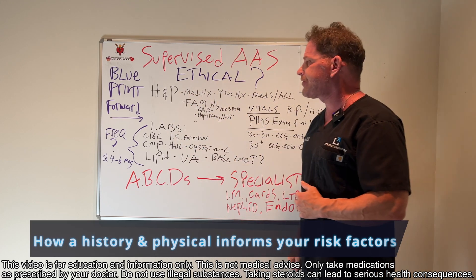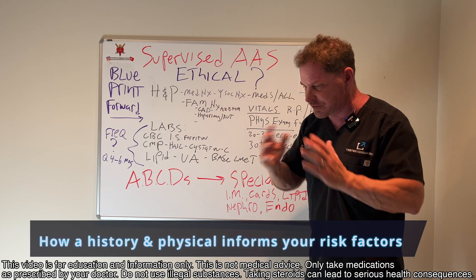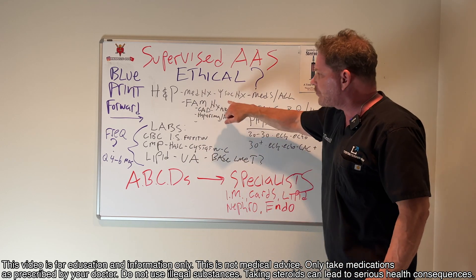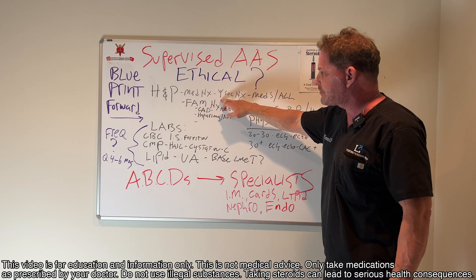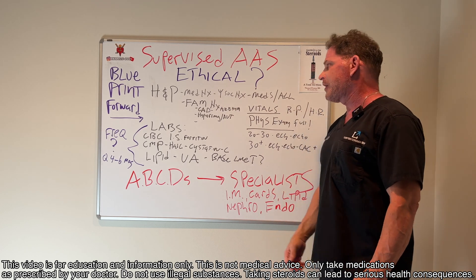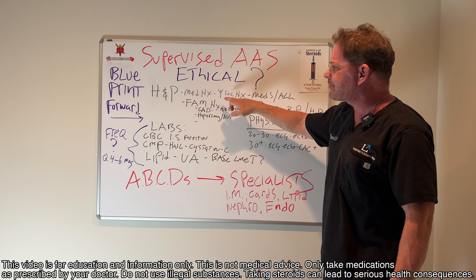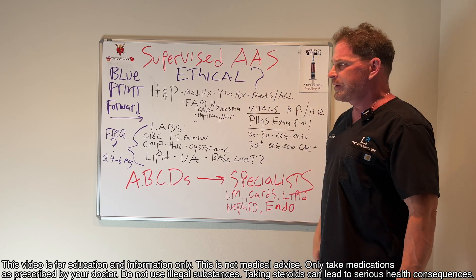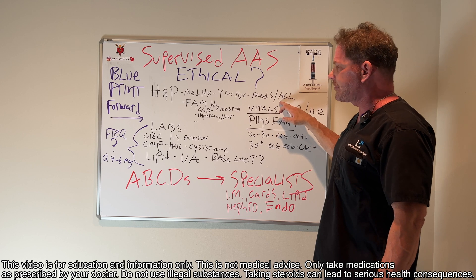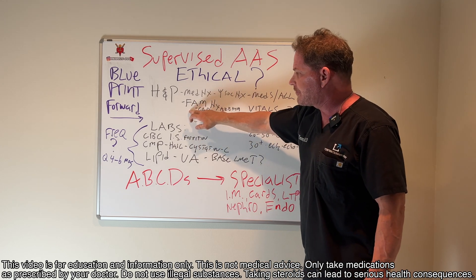The history and physical exam starts first. Everything starts with an H&P. What's your medical history? What's your psychosocial history? Psych, psych, psych. If you have depression and anxiety, you're going to have to be careful because steroid use is absolutely going to affect you. You have to understand that. What medicines are you on? What allergies do you have? Family history.